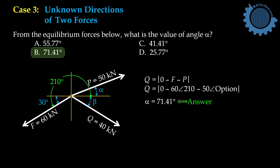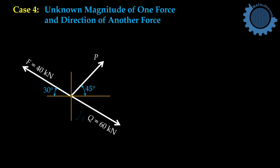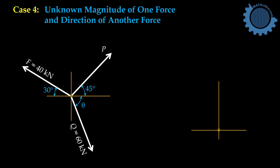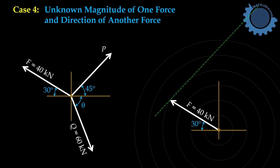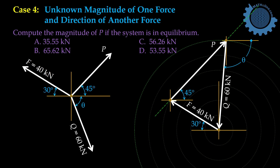In case number 4, the magnitude of one force is unknown and the direction of another force is also unknown. Again, the solution is graphical. This is force F at 40 kilonewton, and this is the line of action of force P with unknown magnitude, and this is the magnitude for Q. The two intersect at a point, giving the magnitude of P and the rotation of Q, which we call theta. We can solve P by cosine law and solve theta from the vertex angles of the triangle. Complex number is again useful if we have a problem with choices — try to solve it as discussed in case number 3.